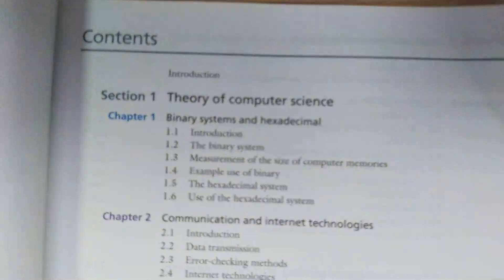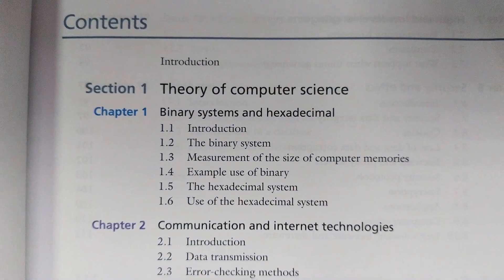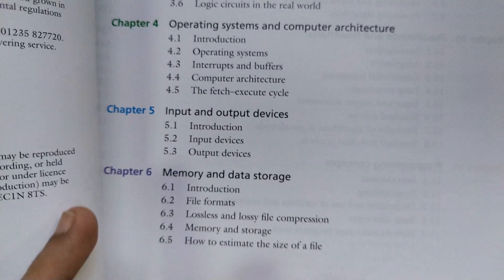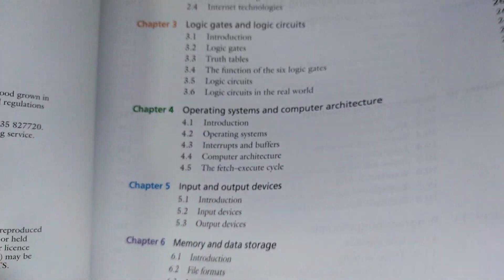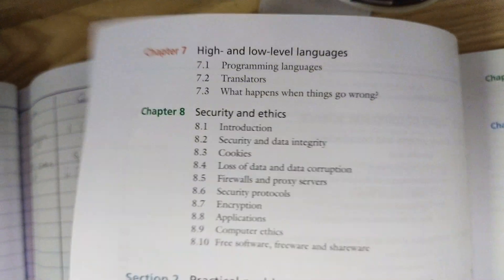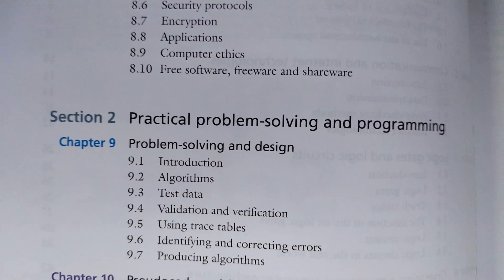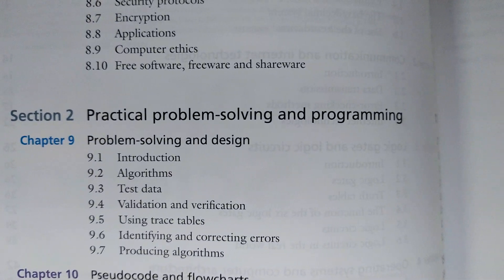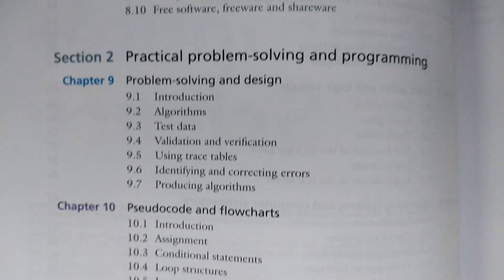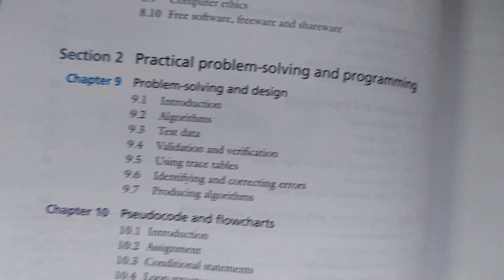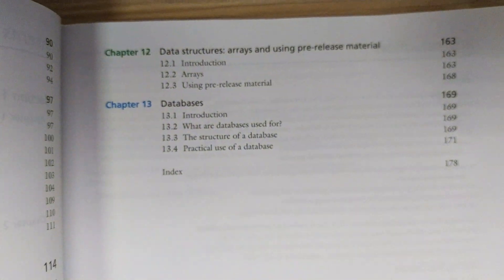In the older book, section number one is Theory of Computer Science and it comprises eight chapters in total. Section number two is Practical Problem Solving in Programming and it comprises five chapters, from chapter nine through chapter thirteen.